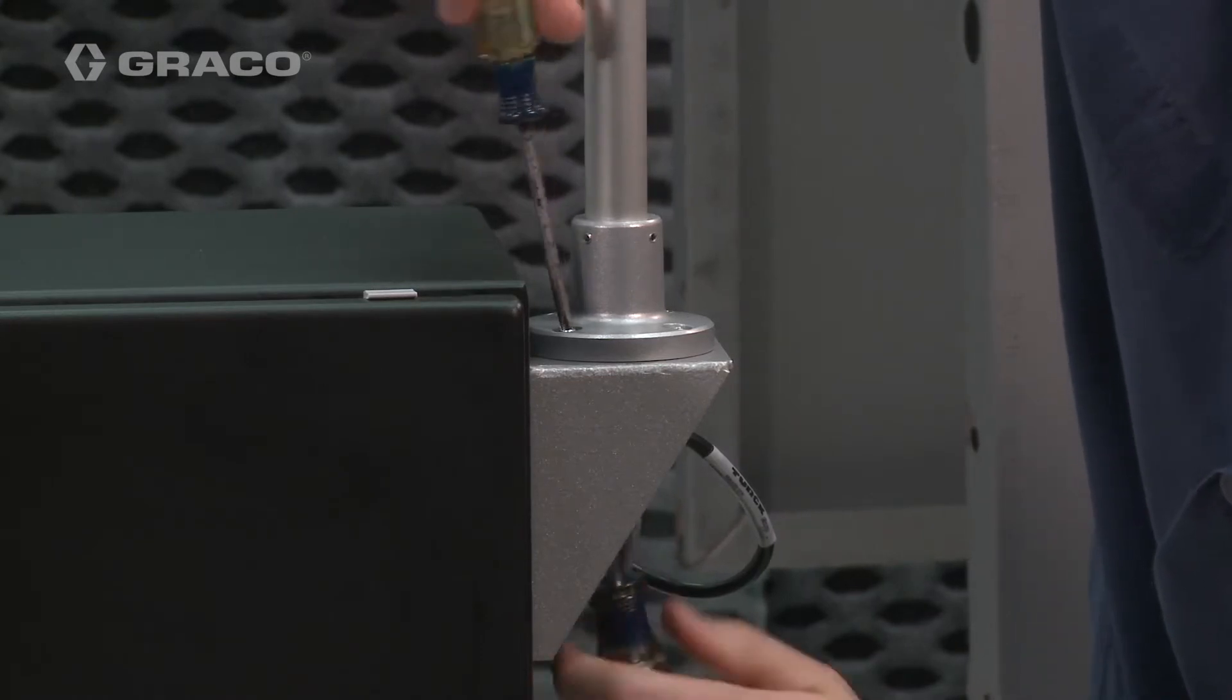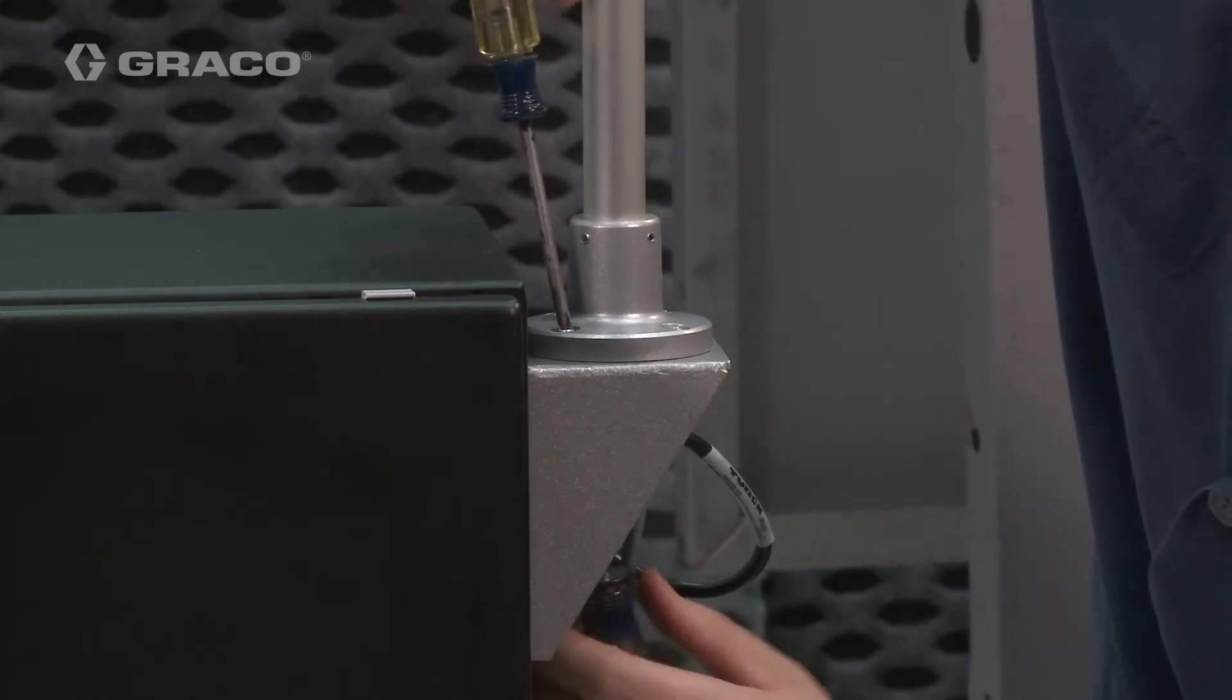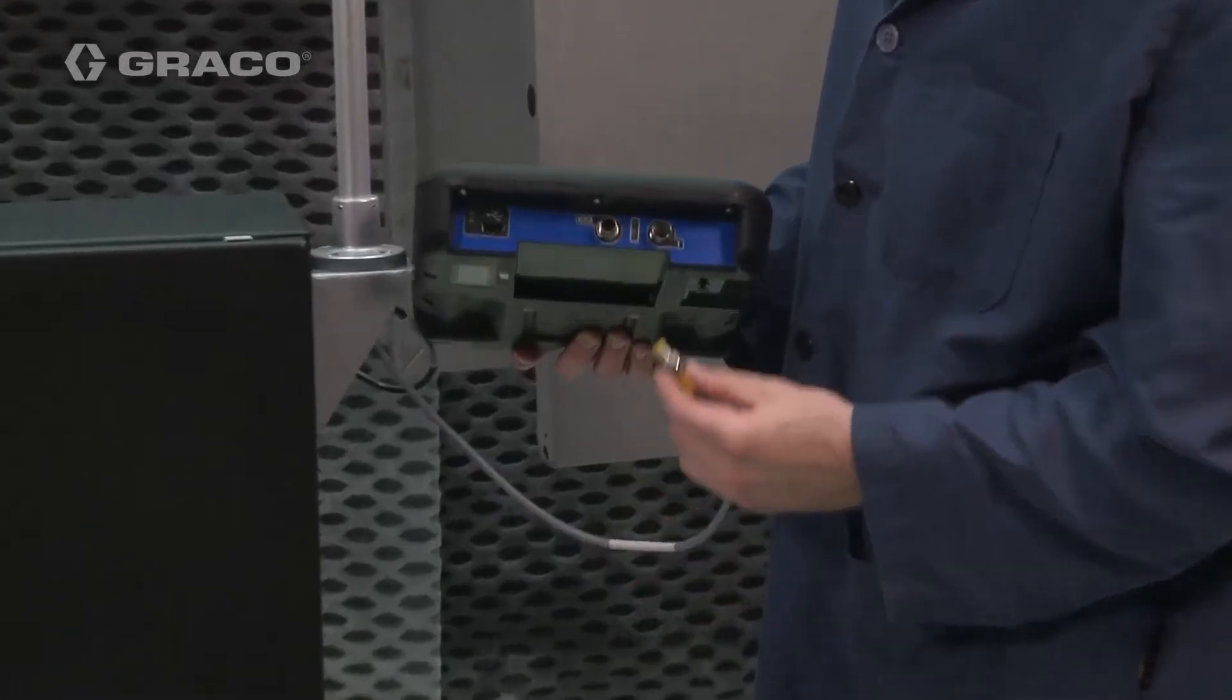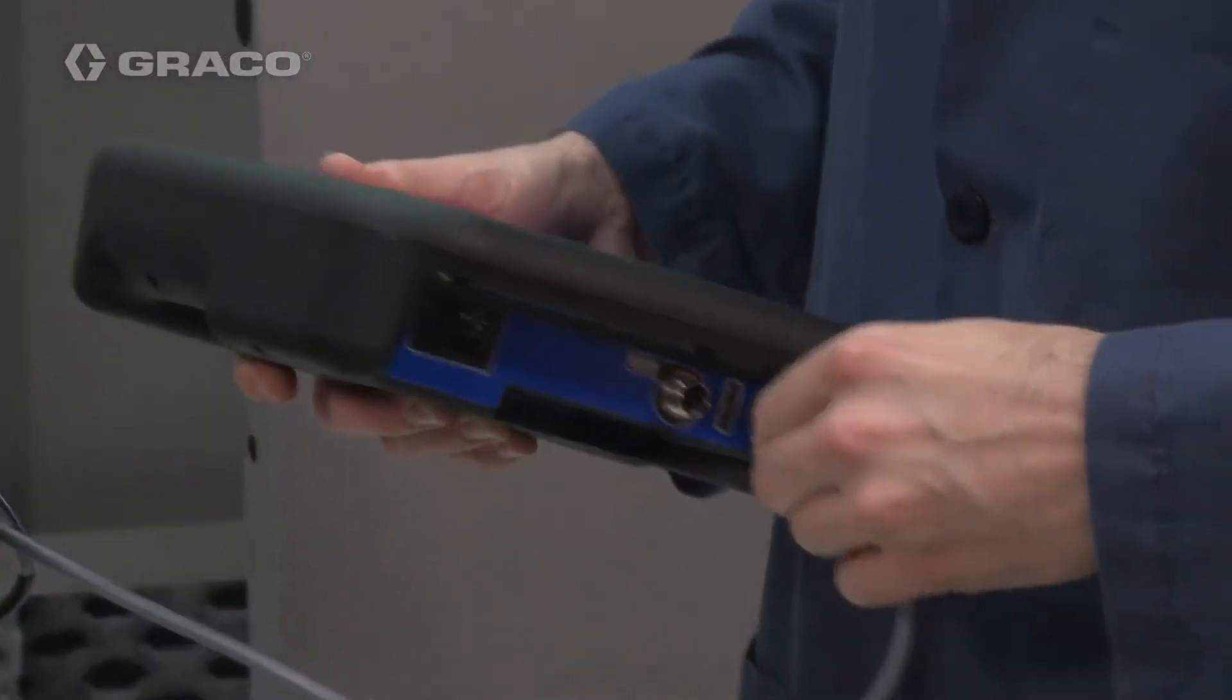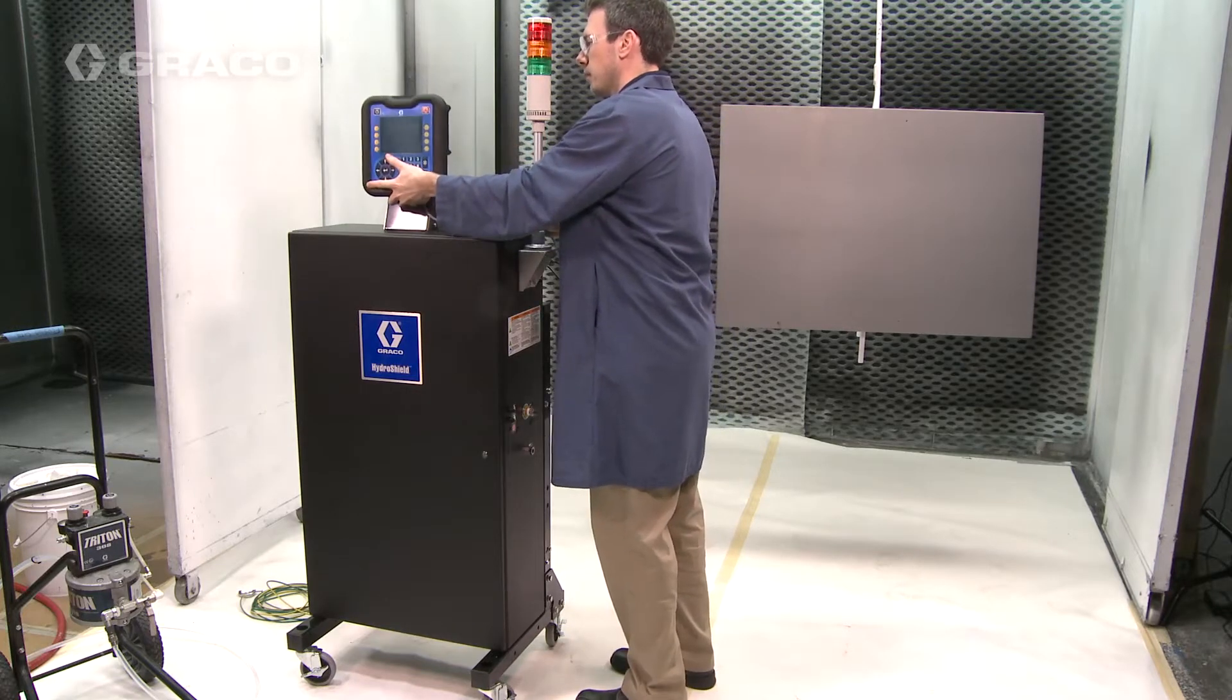Use the screws and nuts provided to mount the light tower onto the light tower bracket. Connect the CAN cable on the light tower to the control interface. Longer cables are available separately.